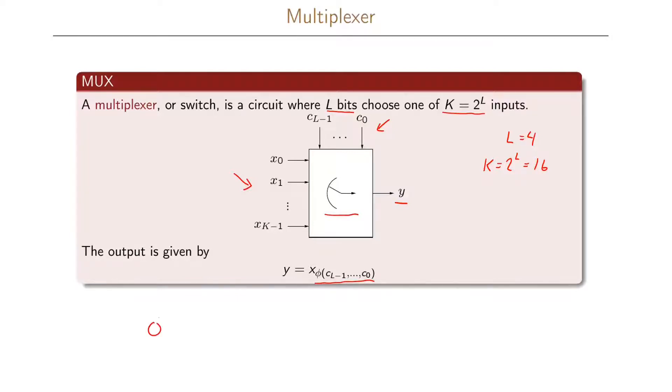This phi function we have defined before, so phi of cL-1 up to c0 is defined as the sum over all our i's from 0 to L minus 1, where we have ci times 2 to the i. In other words, this is the integer representation of this binary vector that we have here as an argument to our phi function.